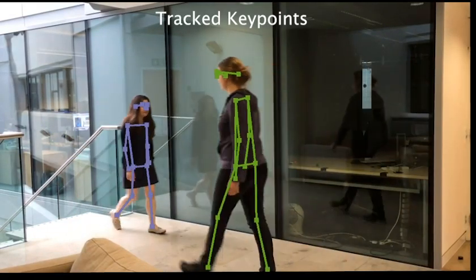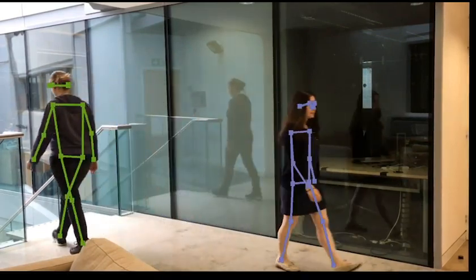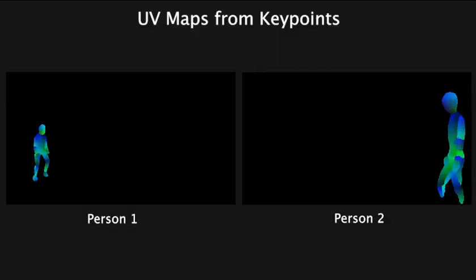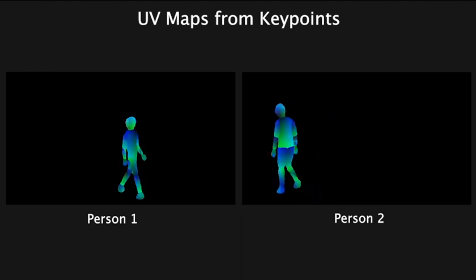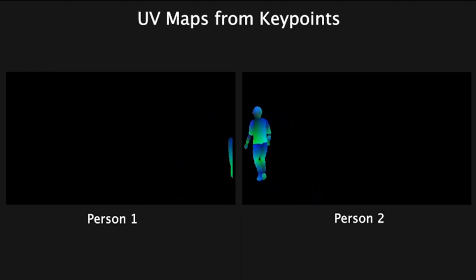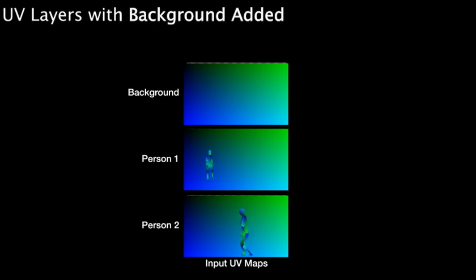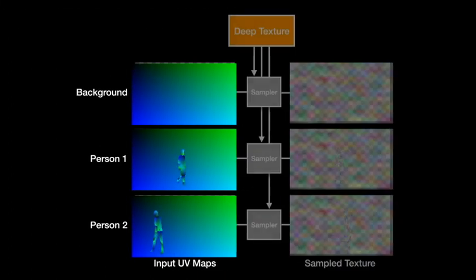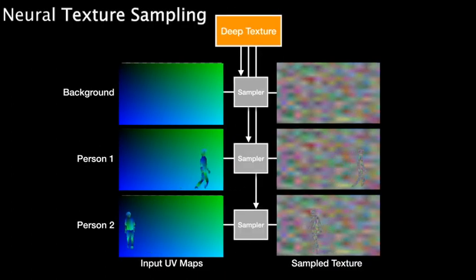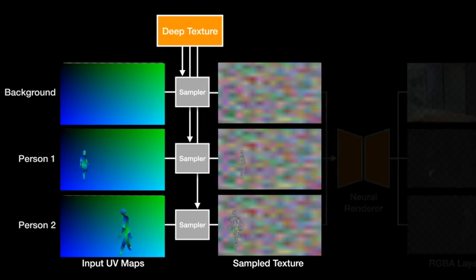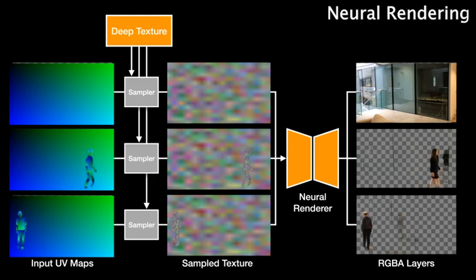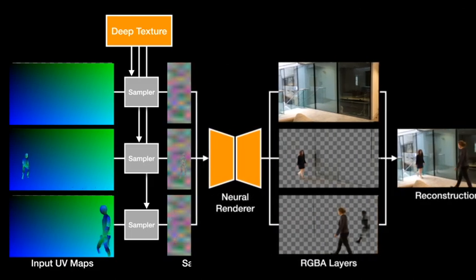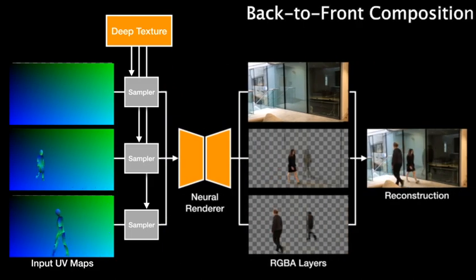To produce the layers, we first track key points of each person in the video. We then compute a separate UV map for each person, and compose these UV maps over a background map. These UV maps are used to sample from a deep texture map, and the results are passed through a rendering neural network. The reconstructed video is created by composing the output layers using conventional back-to-front compositing.